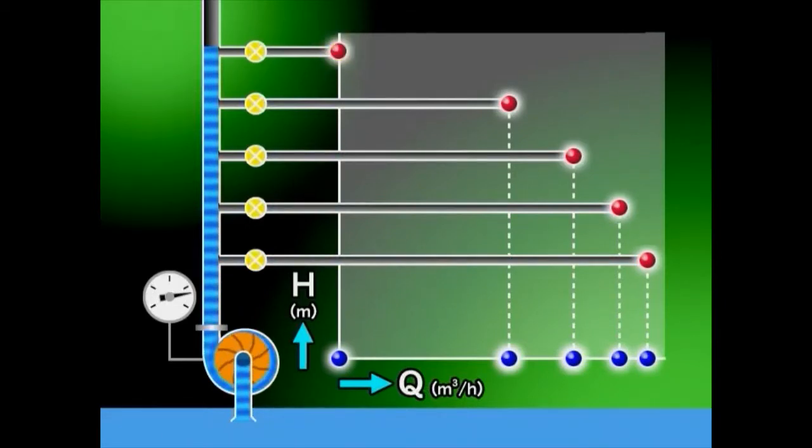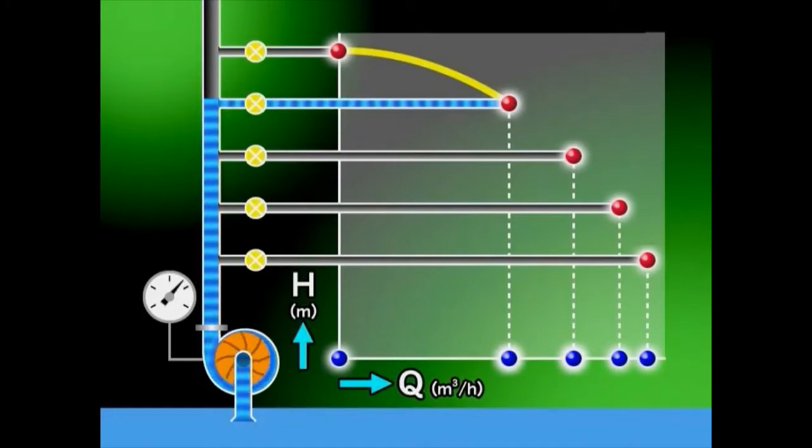When the total pump head is high, the discharge amount becomes small because a greater pressure head is required. As the total pump head comes down, the required pressure head decreases and the discharge amount increases.